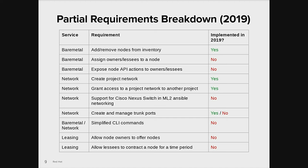Next are the network requirements. We wanted users to be able to create their own networks and to potentially share those networks with another project — things that Neutron already supported very well. The MOC also needed ML2 Ansible networking to support the Cisco Nexus switch, and we discovered that was something we needed to code ourselves. Finally, we needed the ability to create and manage trunk ports. After some investigation, we learned that Neutron did most of what we needed, but there were some pieces that were missing.